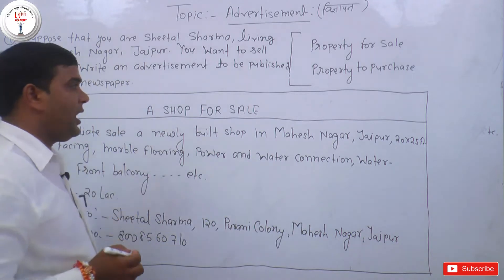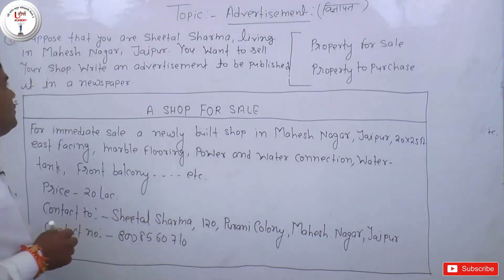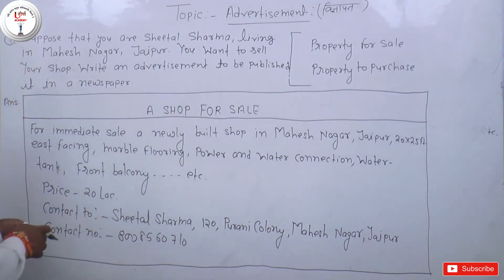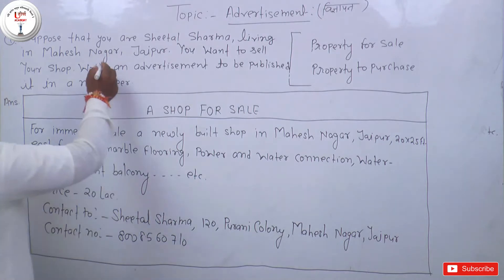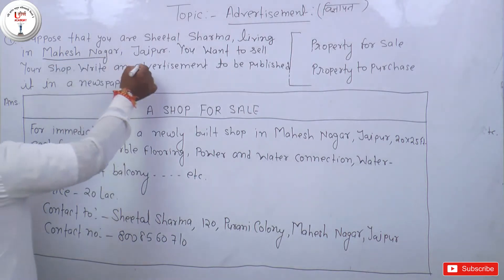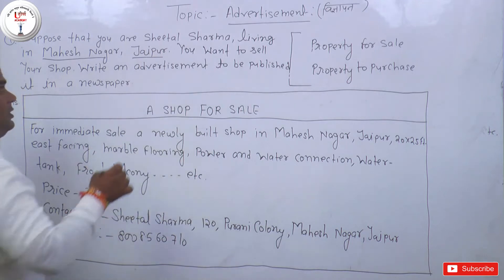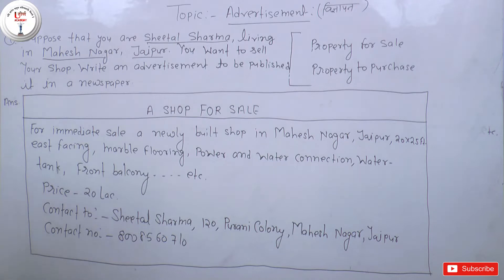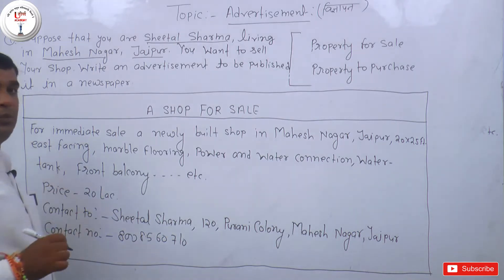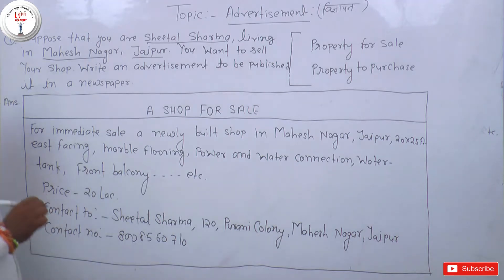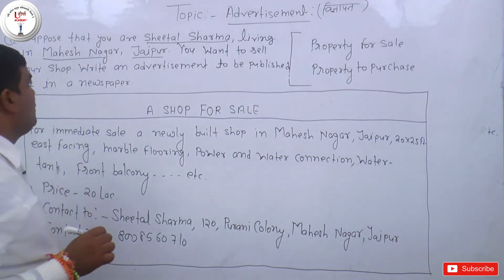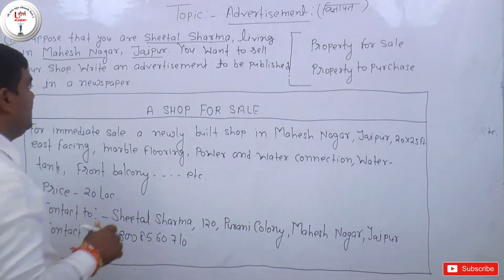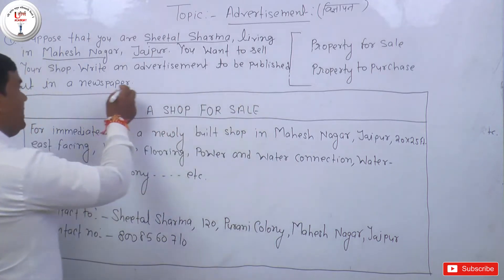Ab next question pe hum charcha kar rahe hain. Dhyan dena aapko ki suppose that you are Seetal Sharma — kalpana karo ki aap Seetal Sharma ho, living in Mahesh Nagar Jaipur. Aap Seetal Sharma ho, Mahesh Nagar Jaipur mein rehte ho, and you want to sell your shop — apni dukaan ko bechna chahte ho.